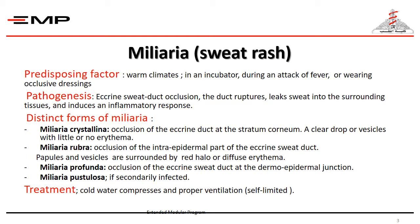Miliaria crystallina involves occlusion of the eccrine duct at the skin surface, resulting in accumulation of sweat under the stratum corneum. Clear droplets or vesicles with little or no erythema form. Miliaria rubra involves occlusion of the intra-epidermal part of the eccrine sweat duct.